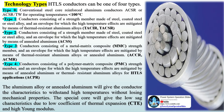Type 4: conductors consisting of a polymer matrix composite (PMC) strength member, and an envelope for which the high-temperature effects are mitigated by means of annealed aluminum or thermal-resistant aluminum alloys for HTLS applications (ACPR). The aluminum alloy or annealed aluminum gives the conductor the characteristics to withstand high temperatures without losing mechanical properties. The special core gives the low-sag characteristics due to a low coefficient of thermal expansion (CTE) and high Young's modulus.